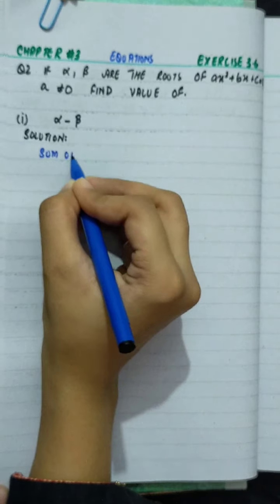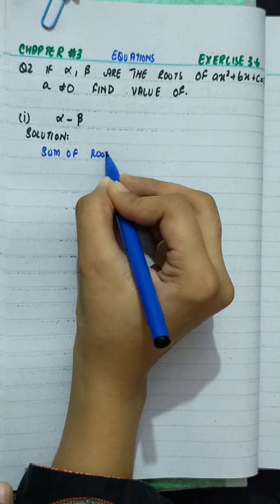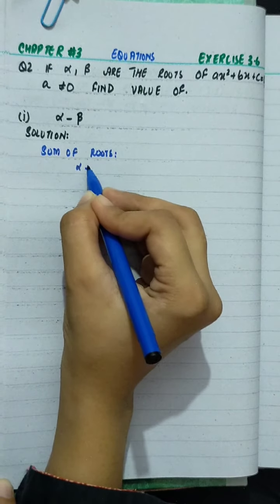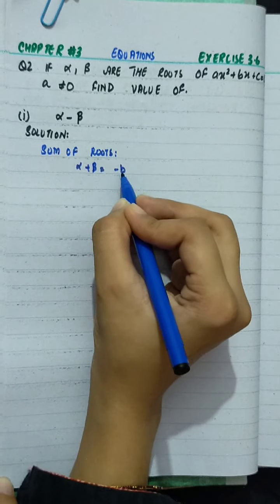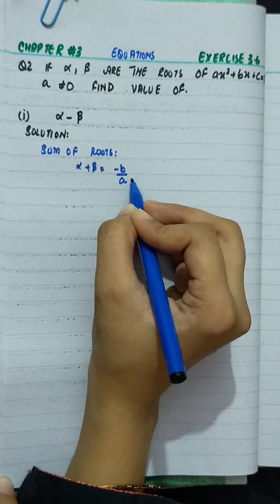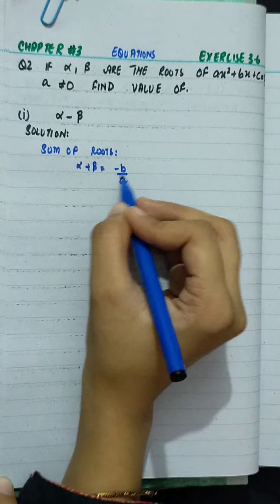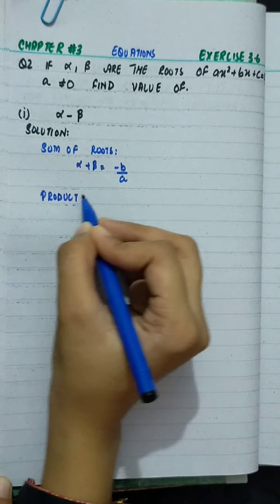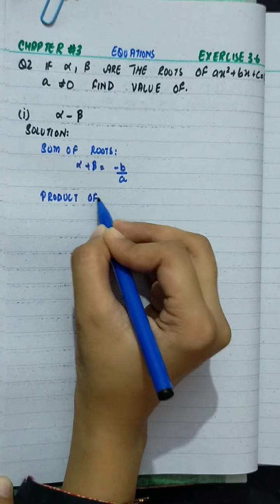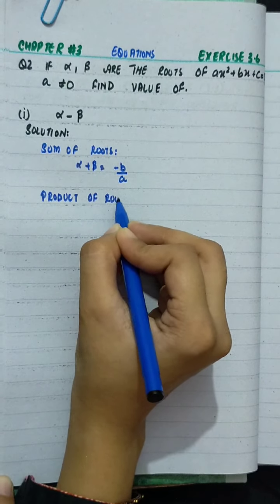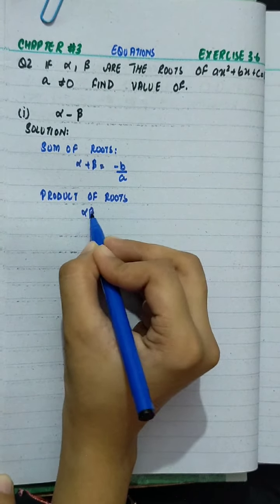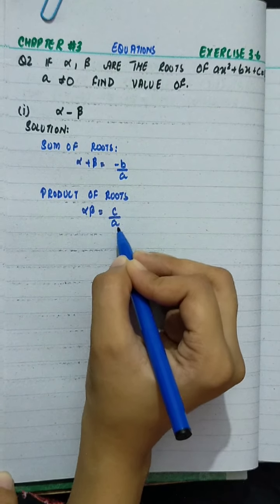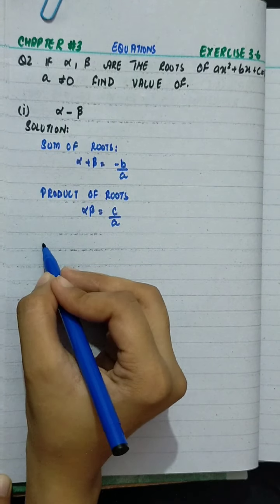First of all, we will write the sum of roots: alpha plus beta equals minus b over a. And the product of roots: alpha times beta equals c over a.